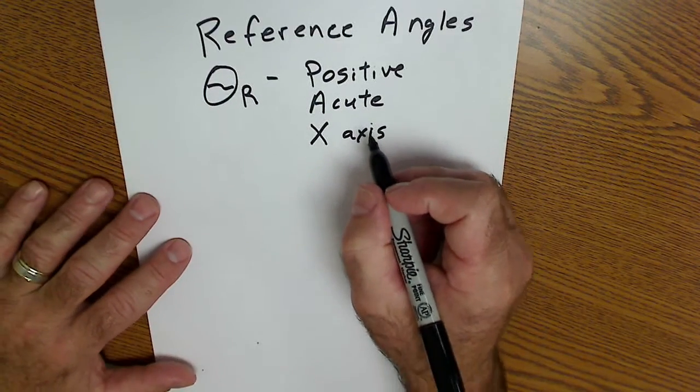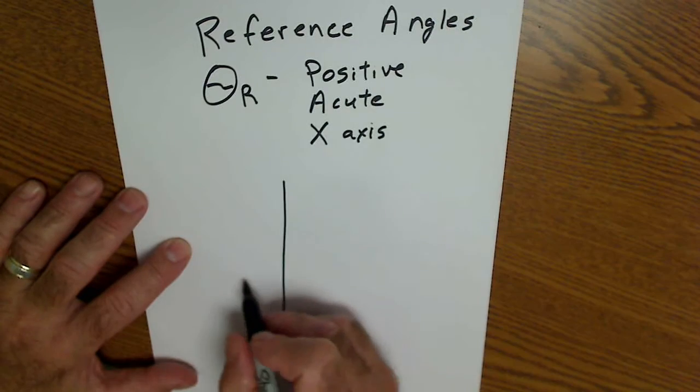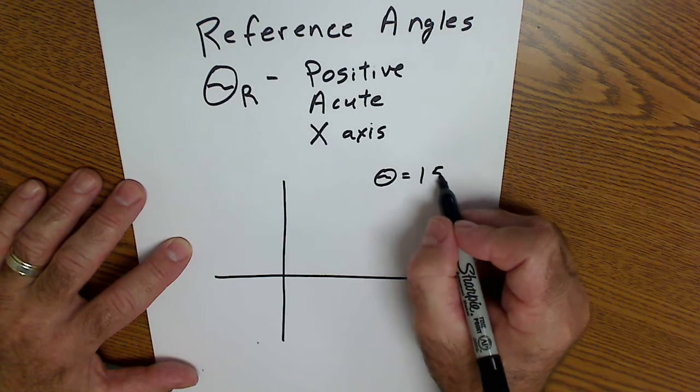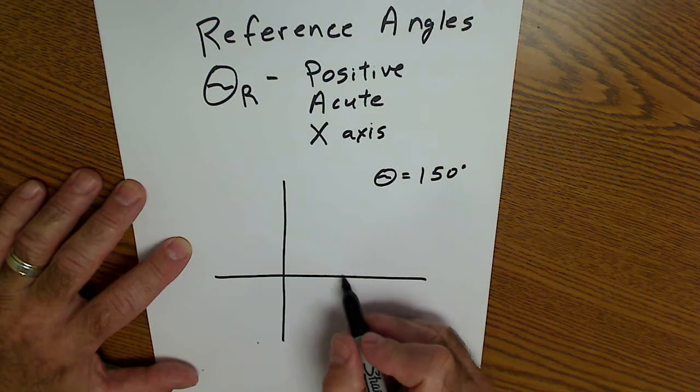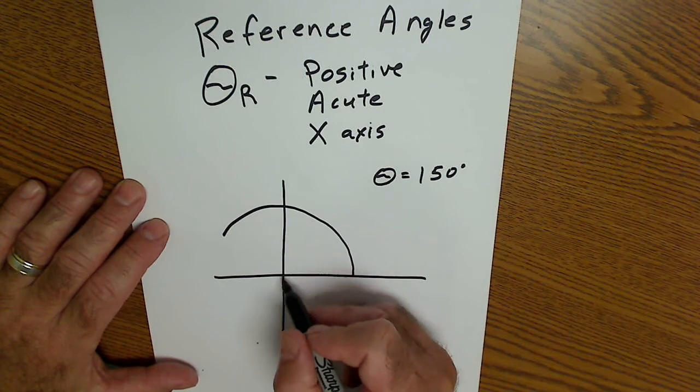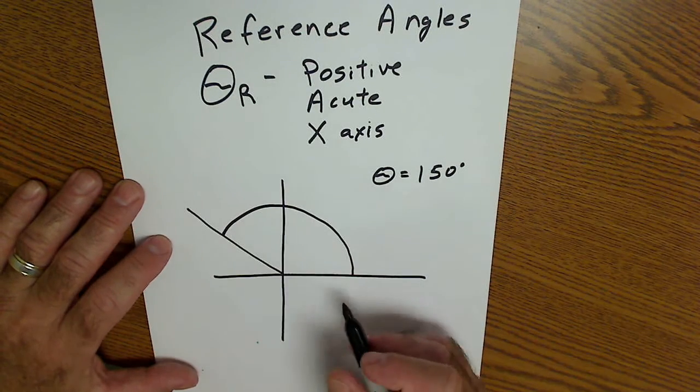Okay, angles of rotation. So if I start here, if I have an angle, call it theta, of 150 degrees, I always start on the x-axis. I rotate counterclockwise to 150 degrees. That's my terminal side.